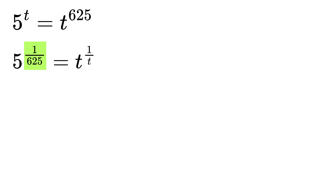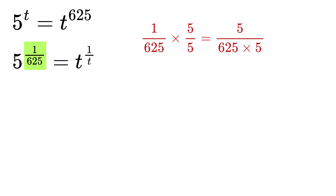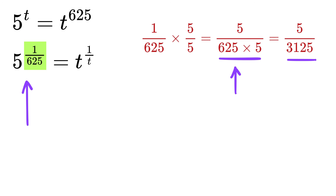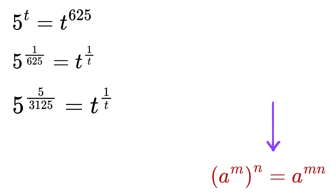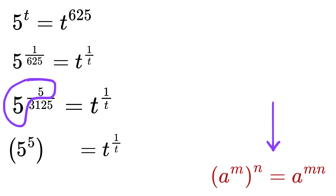Now let's look closely at that 1 over 625. A clever trick here is to multiply and divide this exponent by 5, which gives us 5 over 5 times 625. Now 5 times 625 is 3125, so we can rewrite the left side as 5 raised to the power 5 over 3125.